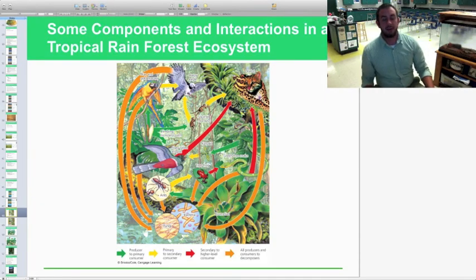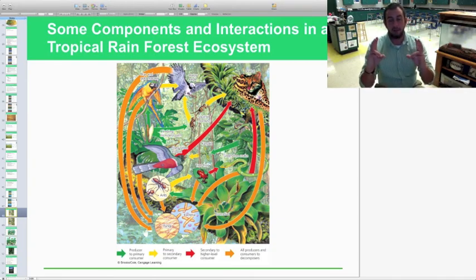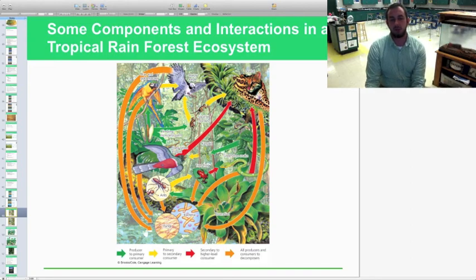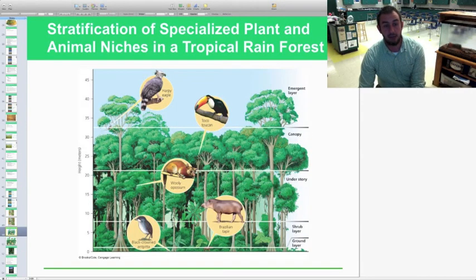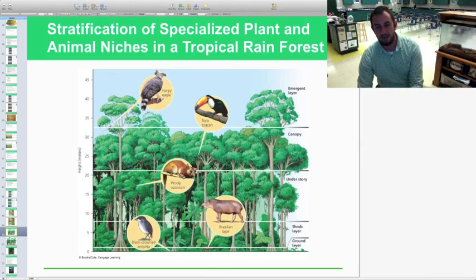This just shows that kind of stratification in different organisms. It shows you a food web, which we looked at in chapter three, definitely with our owl pellets lab. This just shows you the different organisms, how they've adapted to different layers or stratification of the Amazon or the rainforest. This shows you the actual stratification looking at in meters, height in meters, looking at which organisms have adapted, the different layers, the ground layer, the shrub layer, understory, canopy, and then the emergent layer, which actually does get sunlight. And you can see which kind of organisms inhabit those in the tropical rainforest.